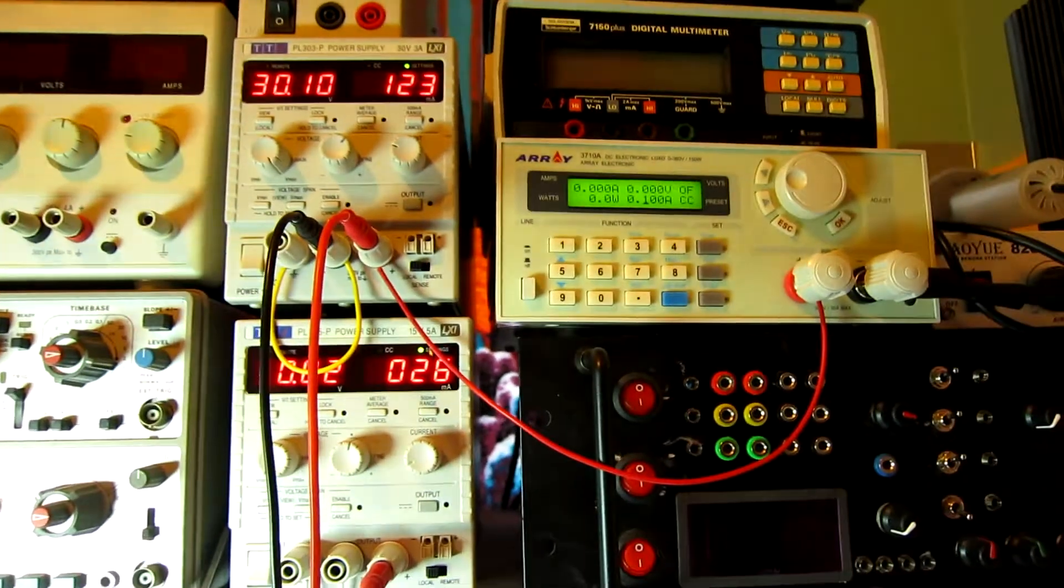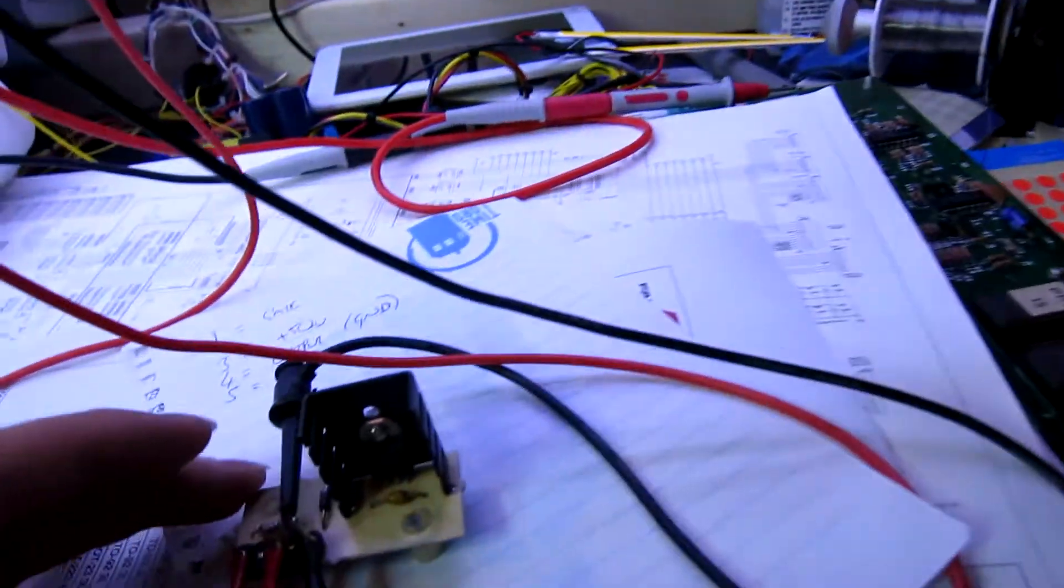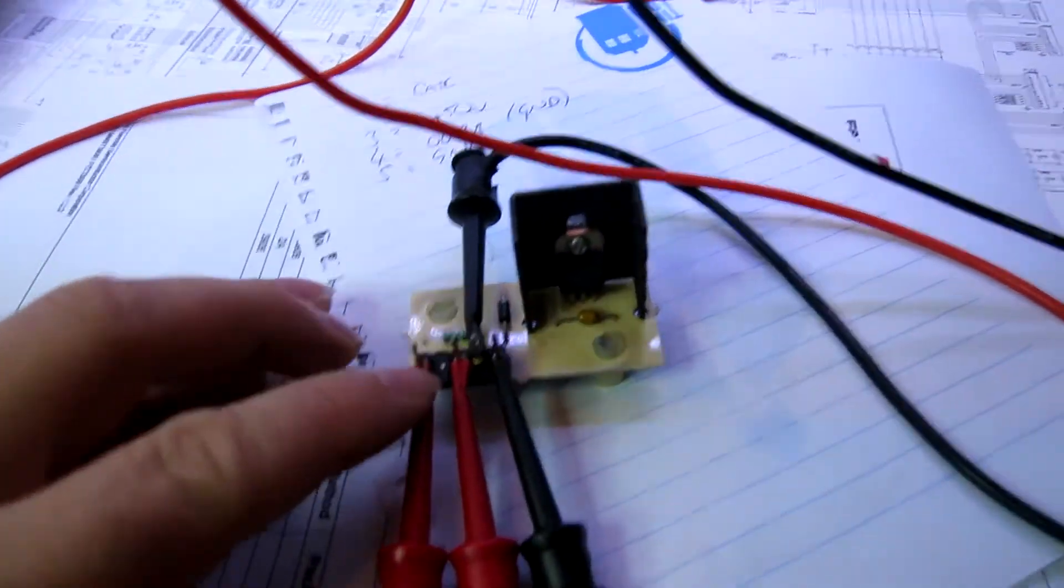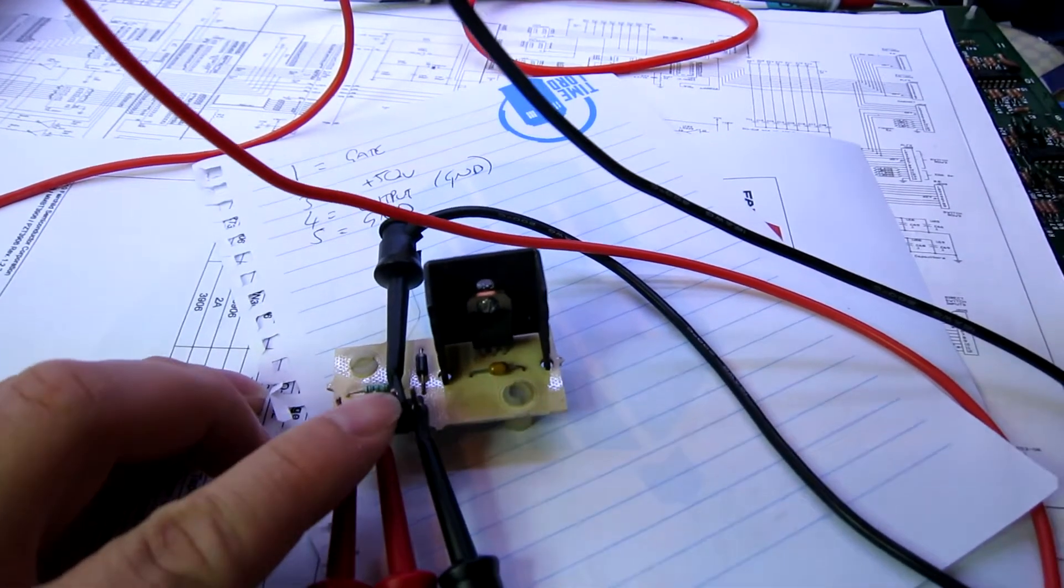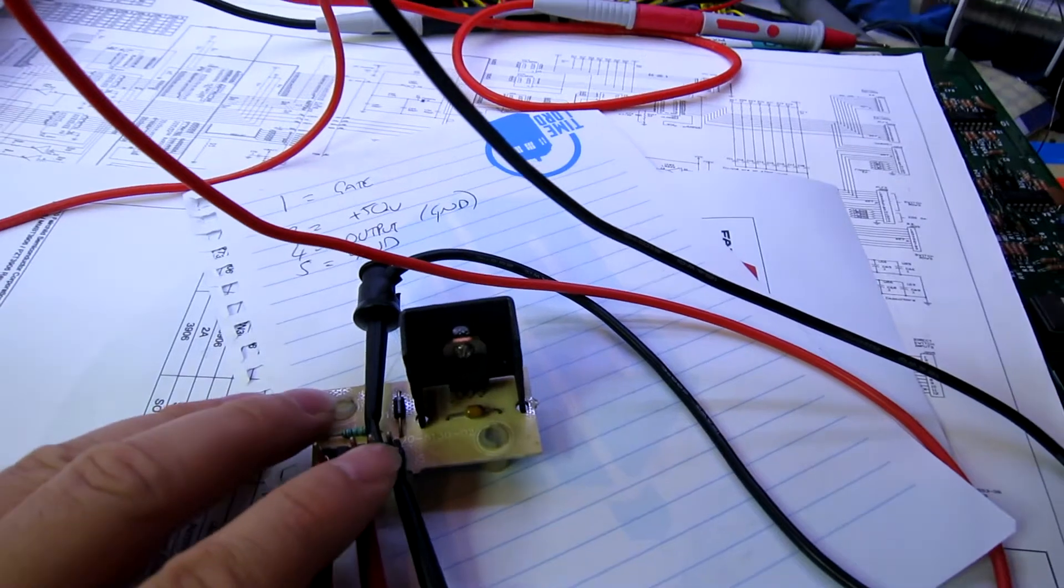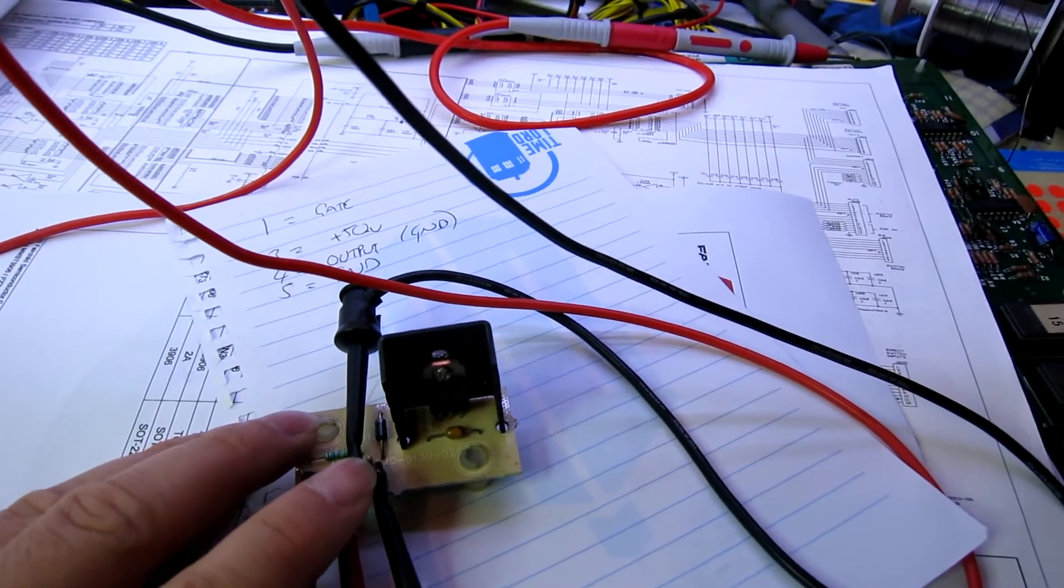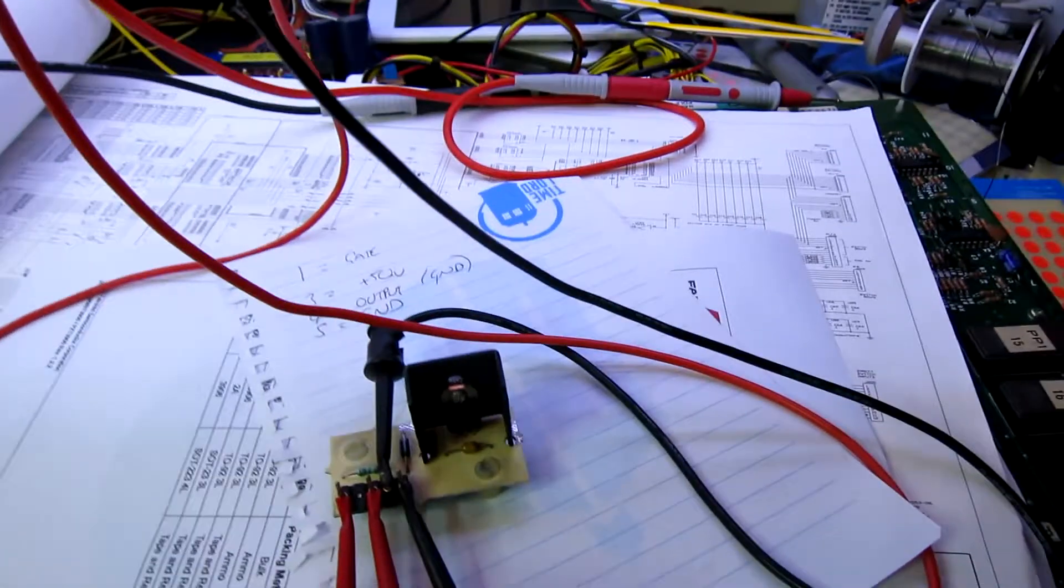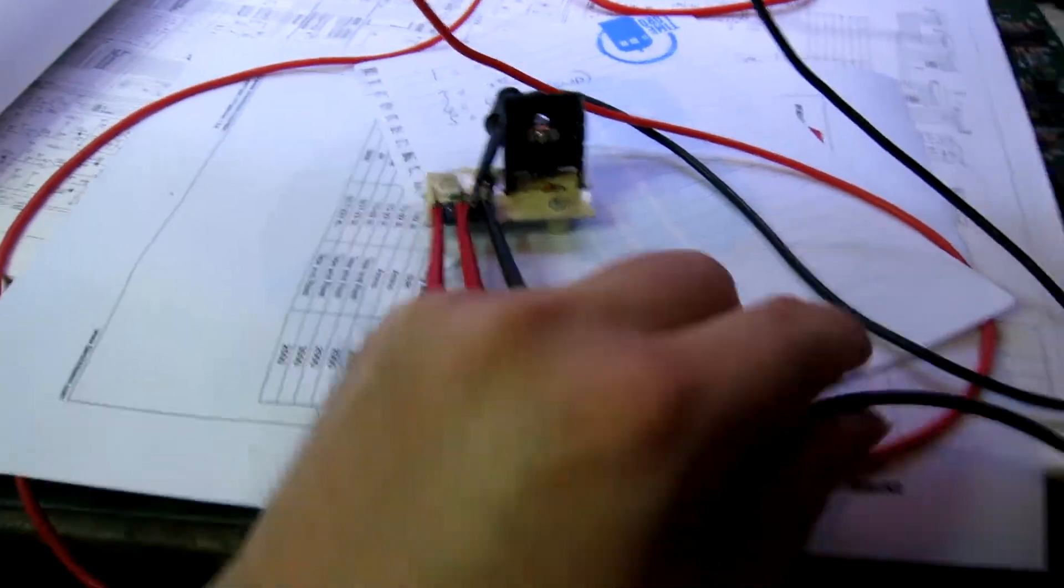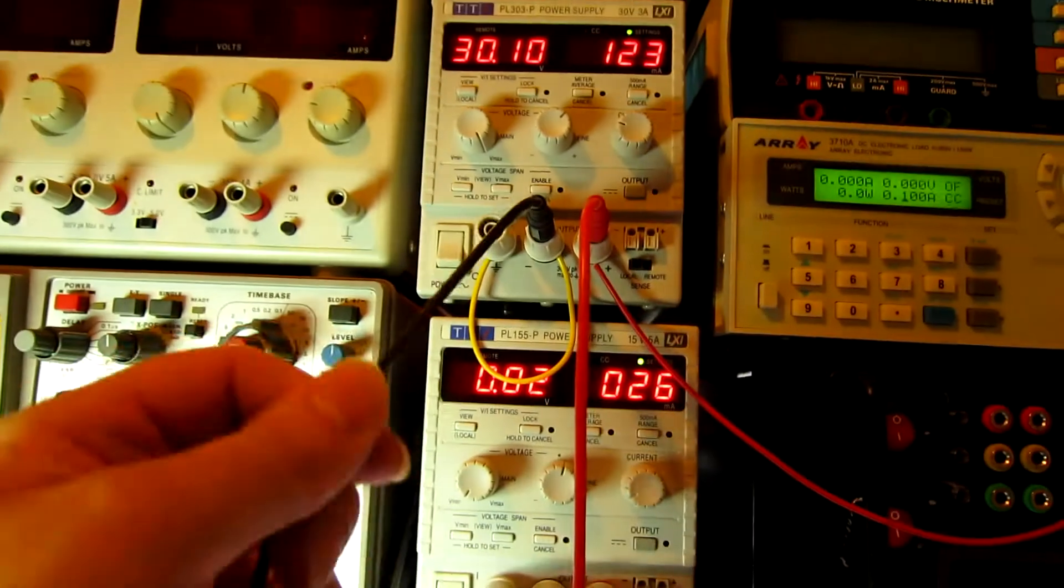Let's explain the pinout first. Pin 1 is the gate control, pin 3 is the input voltage reference, pin 4 is the output which is the negative current control, and pin 5 is the ground.